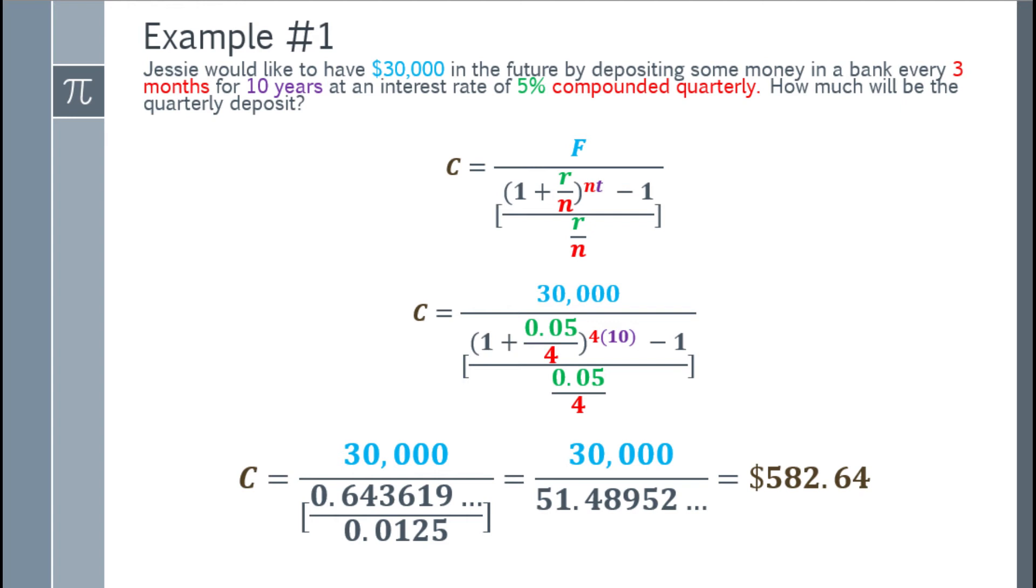Remember, when you round a number, do it only at the final answer. If you round every calculation that isn't the final answer, you won't get the correct result. Going back to the problem, $582.64 is the quarterly deposit Jessie needs to make to get $30,000 in the future. Every 3 months, she deposits $582.64 with a rate of 5% compounded quarterly for 10 years to reach $30,000.